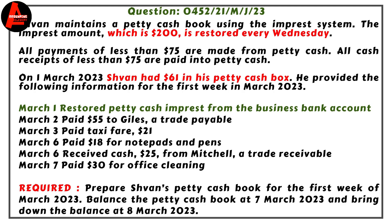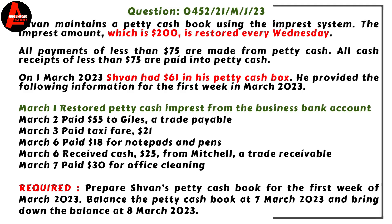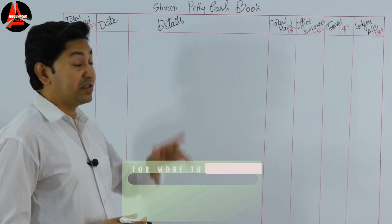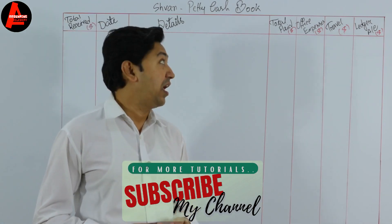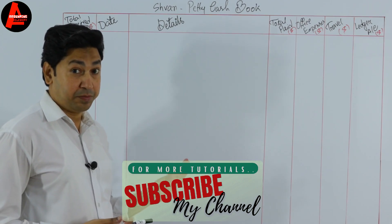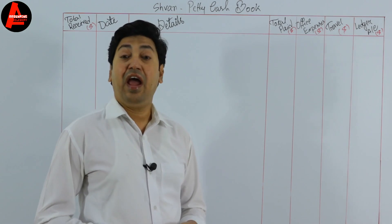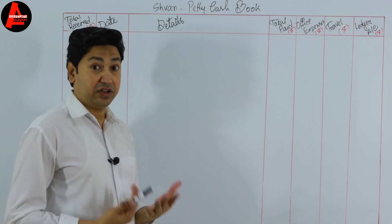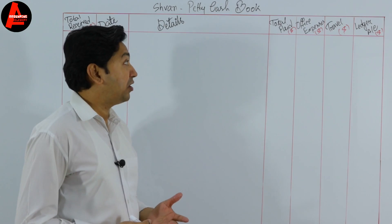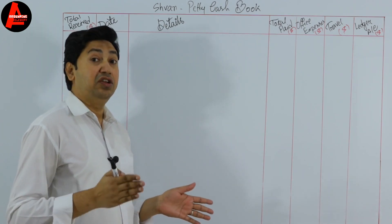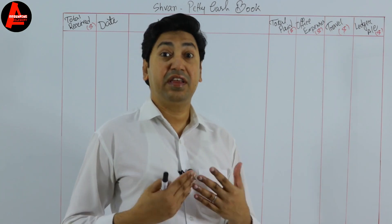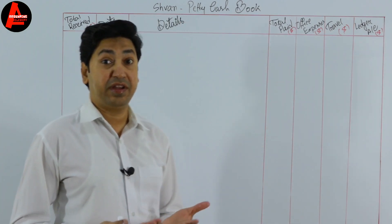The requirement is to prepare Shabon's petty cash book for the first week of March 2023, balance it at 7th March 2023, and bring down the balance at 8th March 2023. This petty cash book covers one week. The opening balance is $61 and the imprest amount is $200 — meaning every week Shabon gets $200 as an imprest amount. He records all expenses under $75 as petty cash expenses in this book.